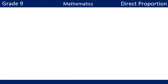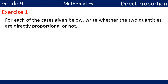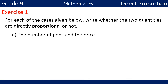Look at Exercise 1. For each of the cases given below, write whether the two quantities are directly proportional or not. First: the number of pens and the price. When the number of pens increases, their prices increase, and when the number of pens decreases, their prices decrease. Therefore, the number of pens and the price are directly proportional.